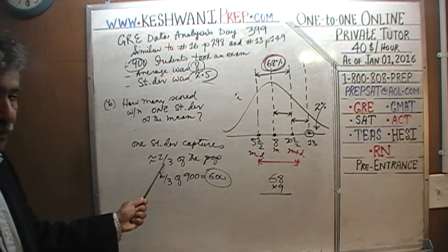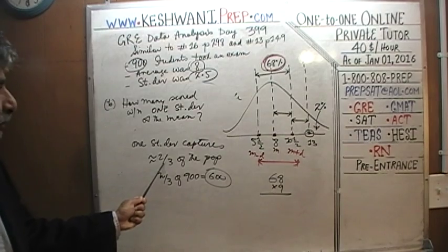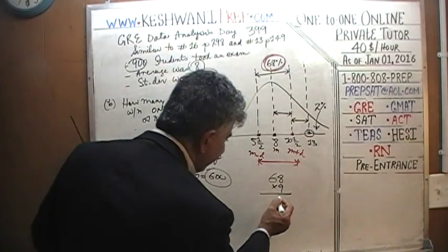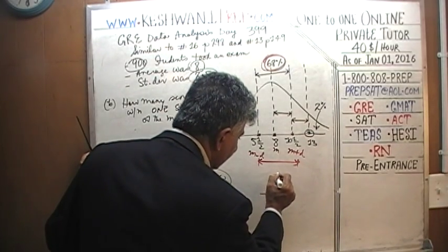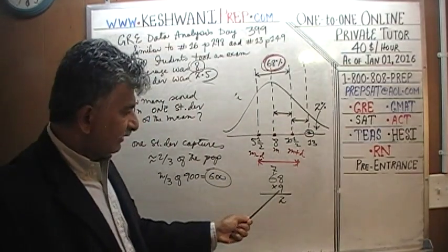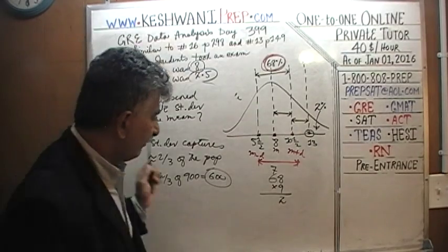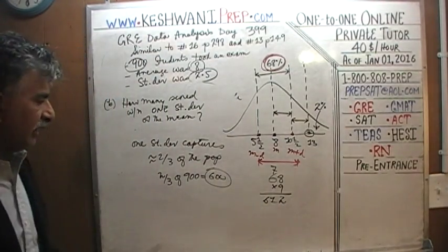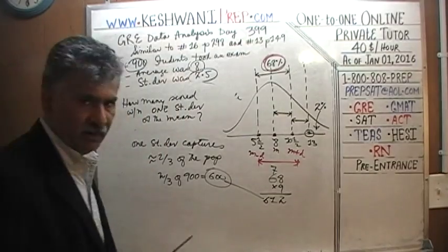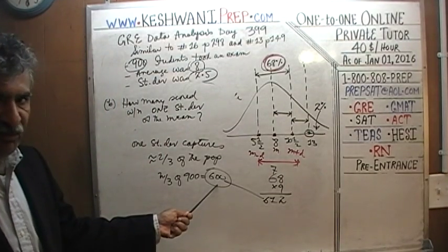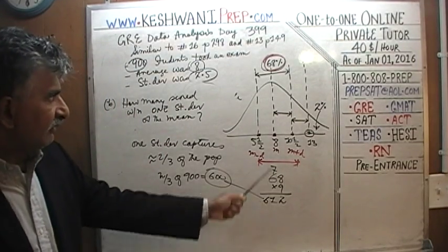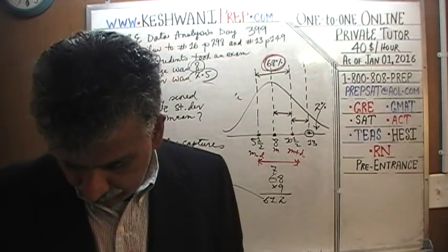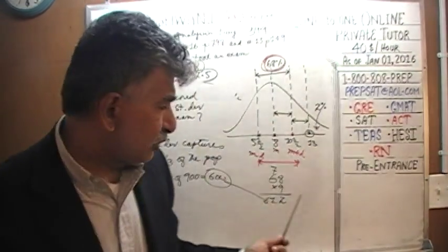68 times 9: eight 9s are 72, carry 7; six 9s are 54, plus 7 is 61 — so 612. This compares to two-thirds which is 66.67%, giving 600. The difference is that 68% gives 612 while two-thirds gives 600, but they are close.